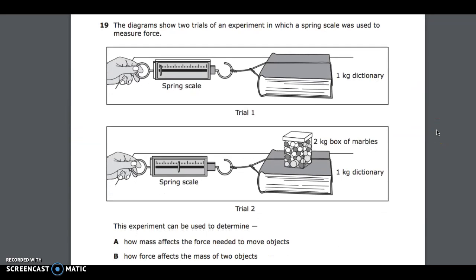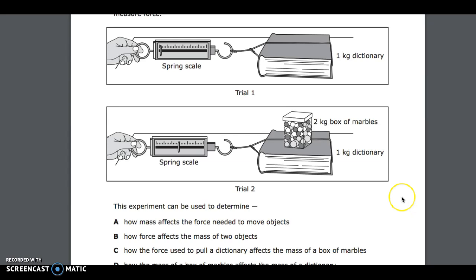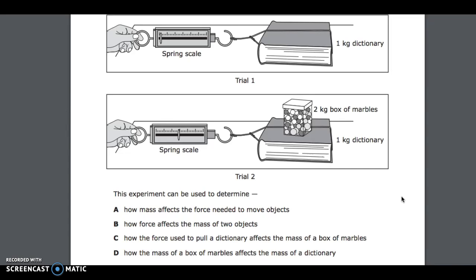Number 19. The diagrams show two trials of an experiment in which a spring scale was used to measure force. Trial 1: spring scale, one kilogram dictionary. Trial 2: two kilogram box of marbles. This experiment can be used to determine: A, how mass affects the force needed to move objects; B, how force affects the mass of two objects; C, how the force used to pull a dictionary affects the mass of a box of marbles; D, how the mass of a box of marbles affects the mass of a dictionary.